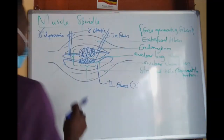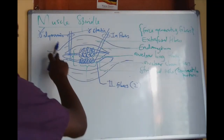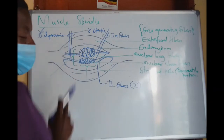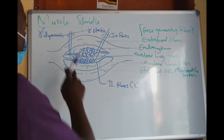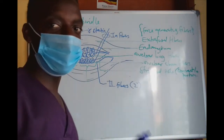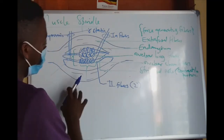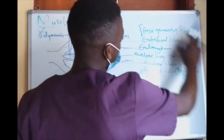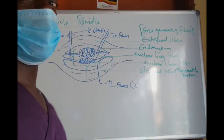The motor fibres of the spindle are not supplied by alpha motor neurons — they are only supplied by gamma dynamic fibres. That is why you do not see alpha motor neuron here. The alpha motor neuron fibres go into the extrafusal fibres to generate the force of contraction; the spindle is just for maintaining and monitoring contraction.